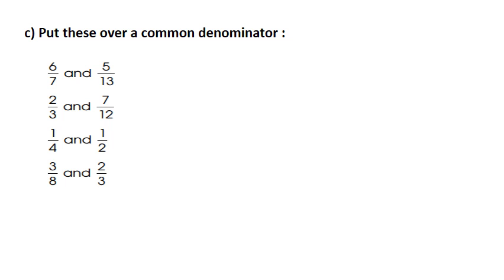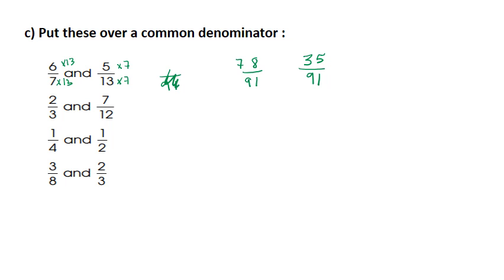Now I have two fractions that don't have the same denominator. So I'm going to multiply them in order to obtain a common denominator for both of them. Don't forget: you multiply the first fraction by the second denominator, and the second fraction by the first denominator, which is 7. In both of them, I will get the same denominator. Both of them will be over 91. Now 6 times 13 is 78, and 5 times 7 is 35 over 91. So the first fraction will be 78 over 91 and the second fraction is 35 over 91.